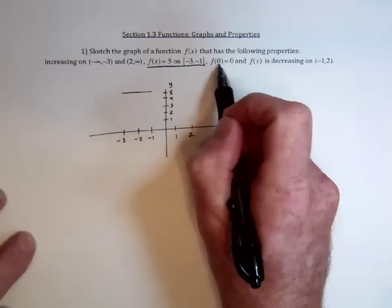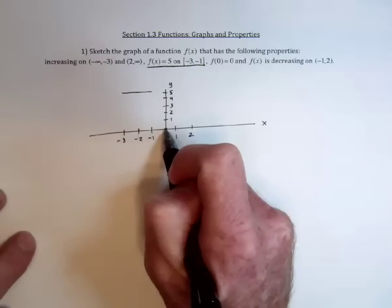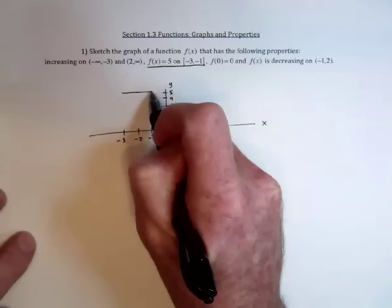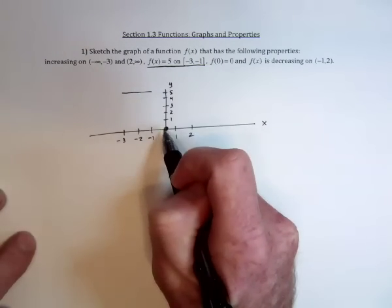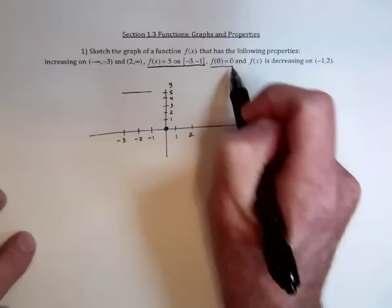Also, this is saying it goes through 0, 0, the origin. So it probably goes down from here. So you have that part finished.